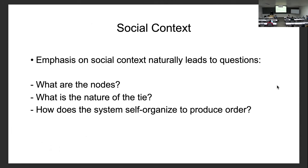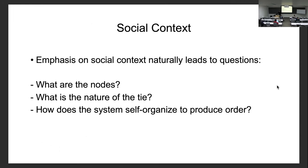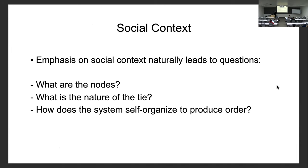It's really important to know your data and know your context of study. What are the nodes? There can be more than one type of node in the network. What's the nature of the tie? What do these connections in your data represent, and what processes underlie their formation?